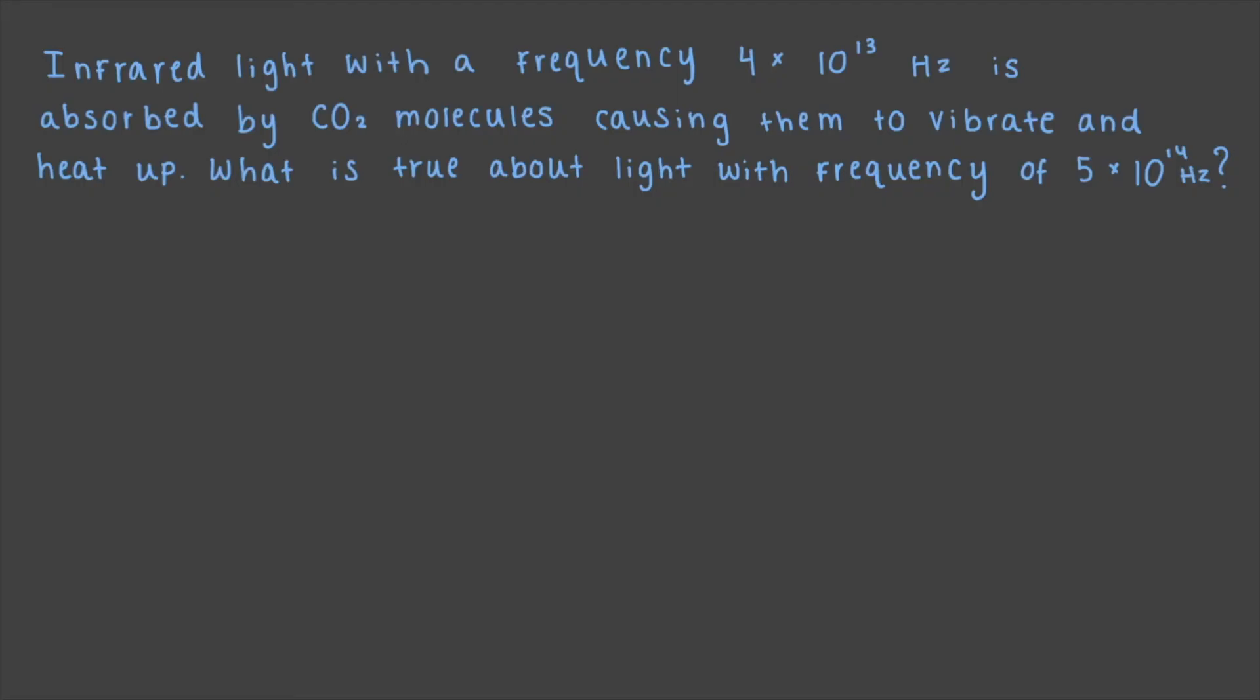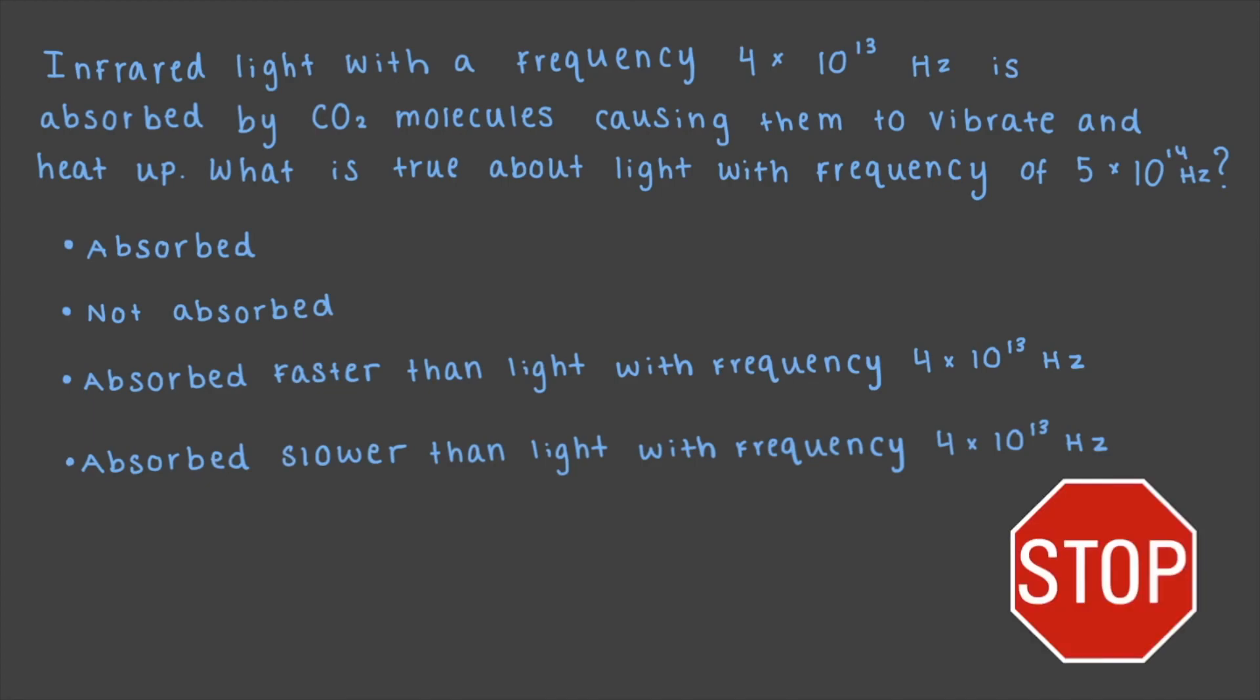Infrared light with the frequency of 4 times 10 to the 13 hertz is absorbed by CO2 molecules causing them to vibrate and heat up. What is true about light with the frequency of 5 times 10 to the 14 hertz? If the frequency of the light does not match the natural resonant frequency of the matter, then the light is not absorbed. So this light would go right through the molecules of CO2 and have no effect.